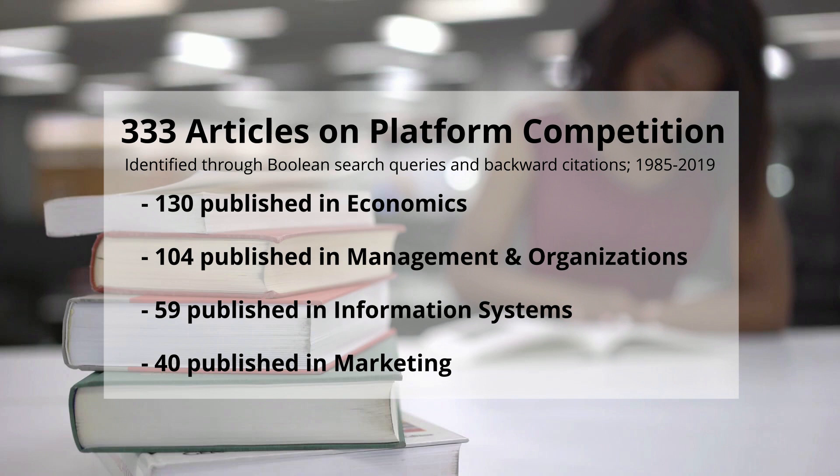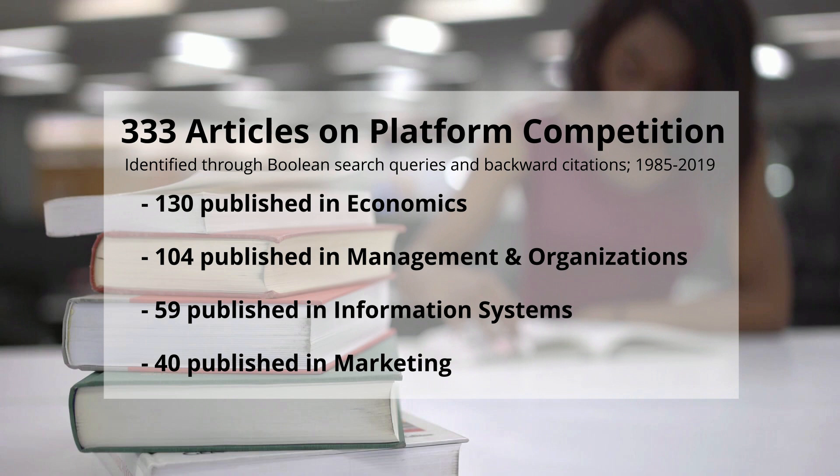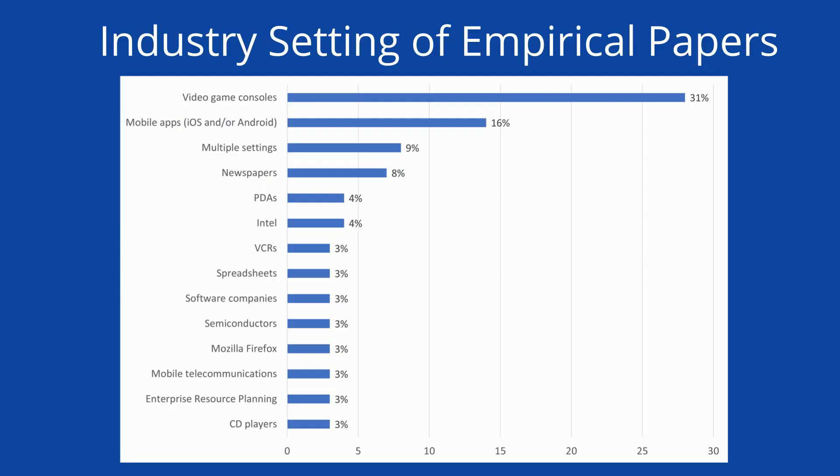The review used Boolean search queries and backward citations to identify 333 articles on platform competition, published between 1985 and 2019. These include articles published in economics, management organizations, information systems, and marketing. The most popular industry settings for empirical papers have been video games with 31% of empirical papers, and mobile apps for 16% of empirical papers.